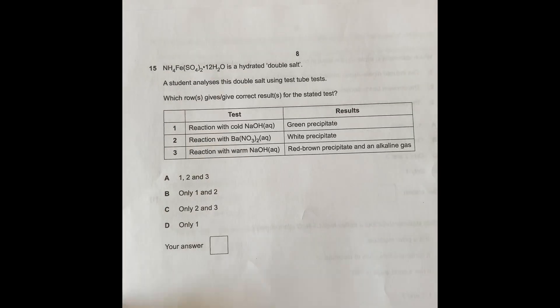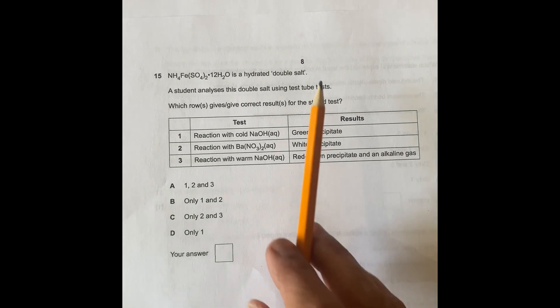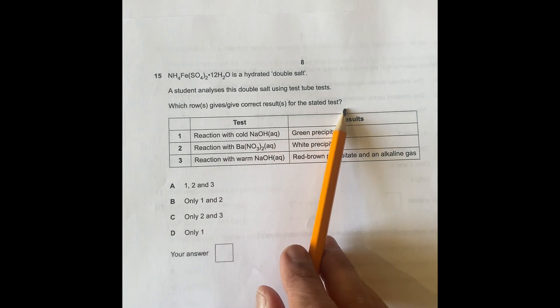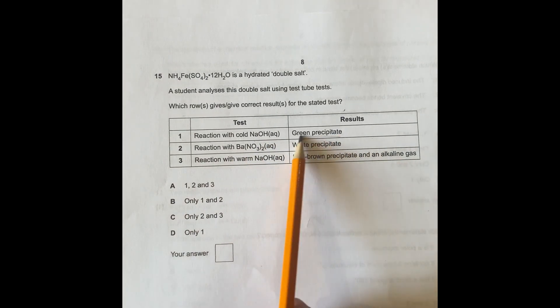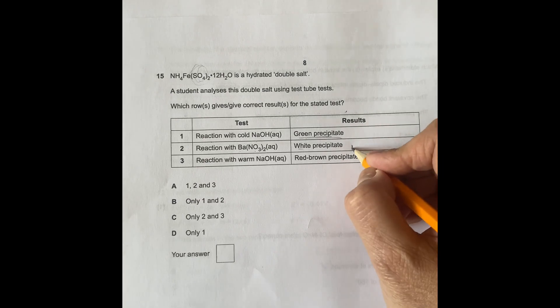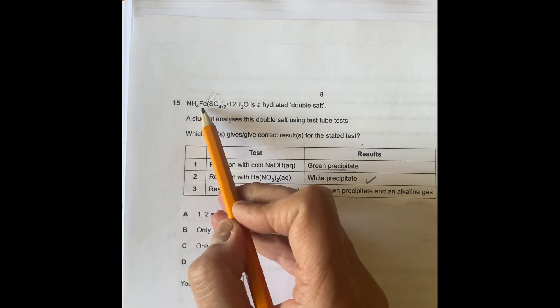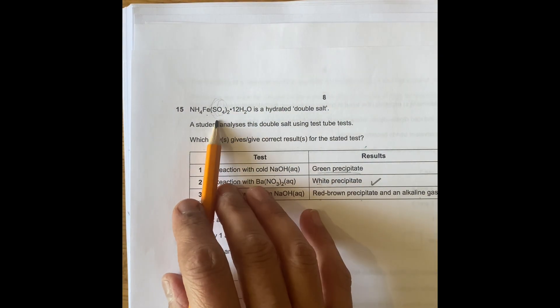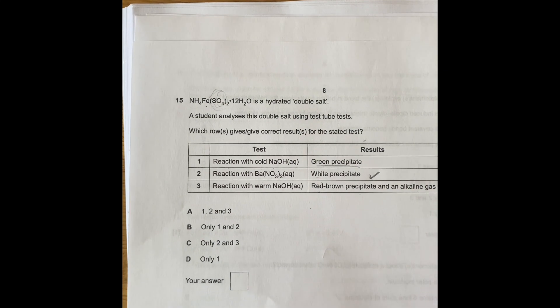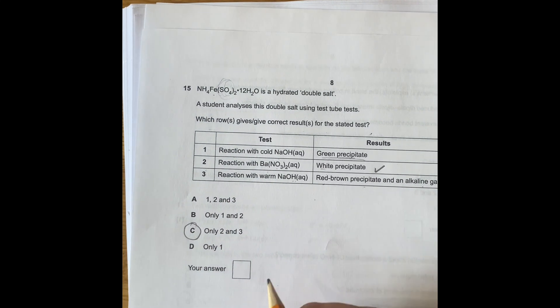And then the last one, a student analyzes a double salt using test tubes. Which will give the correct result for the stated test? So you've got reaction with cold sodium hydroxide, green precipitate, that doesn't happen. Reaction with barium nitrate, that means you react with sulfate there, it gives you white precipitate, that happens. Reaction with warm sodium hydroxide gives you reddish brown precipitate and alkaline gas, that means you form Fe3 iron, and you form also ammonium gas. So it has to be this one here. So it's two and three, so the answer is C, as far as I can see.